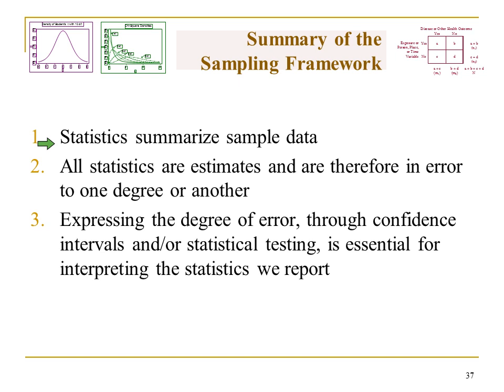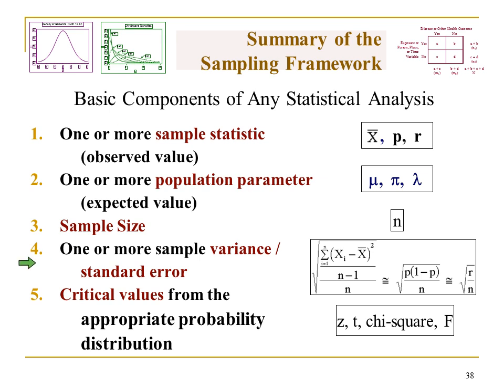Just to summarize — that was my brief overview of the sampling framework to get the wheels greased for next week. Statistics summarize sample data; all statistics are estimates and therefore are in error to one degree or another. We can express the degree of error through confidence intervals or statistical testing, which is essential for interpreting the statistics we report. The basic components of any statistical analysis include a sample statistic (our observed value), a population parameter (our expected value, never measured directly), our sample size, one or more sample variances or standard errors, and the critical value from the appropriate probability distribution.